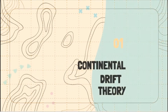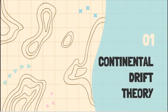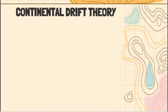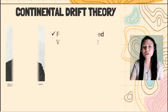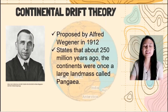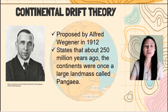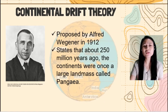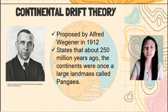We will be discussing all about continental drift theory. This was proposed by Alfred Wegener in 1912, and it states that about 250 million years ago, the continents were once a large landmass called Pangea.